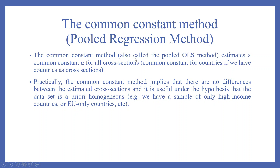The common constant method, also called the pooled OLS method, estimates a common constant alpha for all the cross-sections — for example, common constant for countries if we have countries as a cross-section. Practically, the common constant method implies that there are no differences between the estimated cross-sections, and it is useful under the hypothesis that the data set is a priori homogeneous — for example, we have a sample of only high-income countries or EU, that is European-only countries.